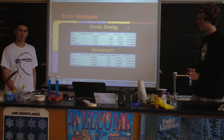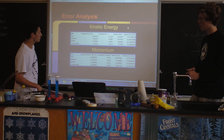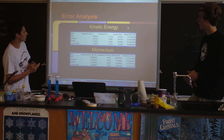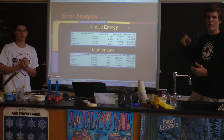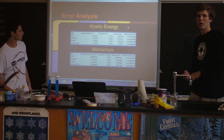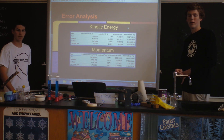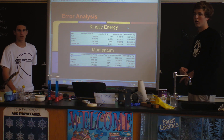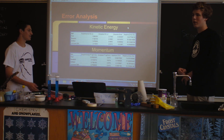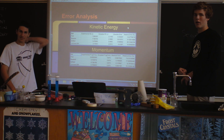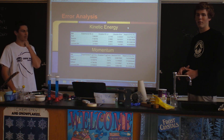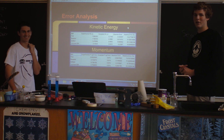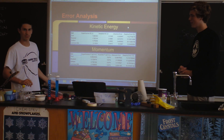When asked how they calculated kinetic energy and momentum experimentally, they confirmed they used the velocity found from video analysis. The teacher pointed out that both quantities hinge on velocity, so if both are too low, the velocity itself must be too low. After some prompting, they identified air resistance as the cause of the lower-than-expected experimental velocity.